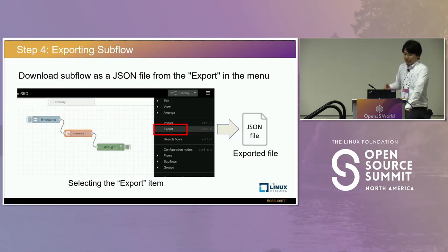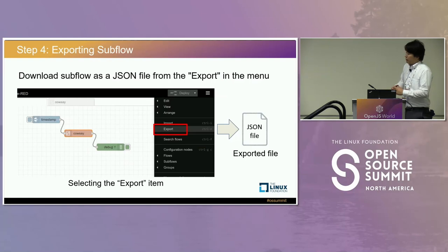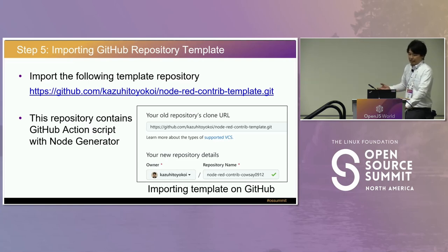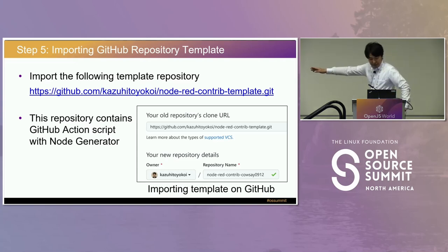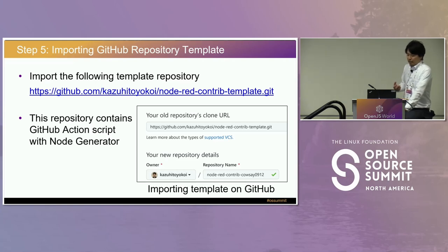The next step is to export the subflow. To download it to my local PC, I selected the export item from the menu. The exported file is a JSON file containing all information including connector definitions. Next, I prepared the GitHub repository. For connector development, I shared a template repository at the provided URL. This repository contains GitHub Actions scripts with Node Generator, making it easy to convert the subflow into a custom connector on the GitHub repository.